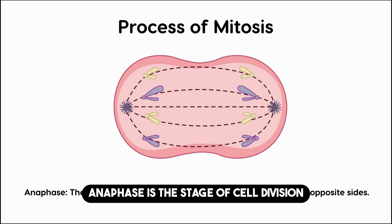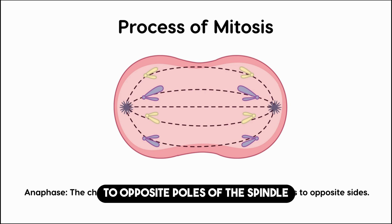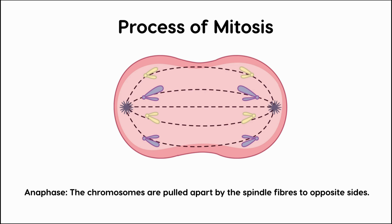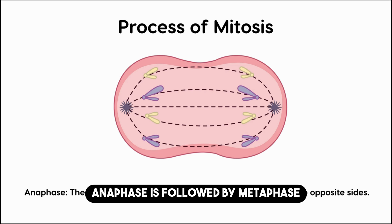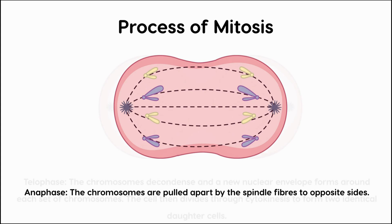Anaphase is the stage of cell division during which the chromosomes migrate apart to opposite poles of the spindle. Anaphase is followed by metaphase and preceded by telophase.